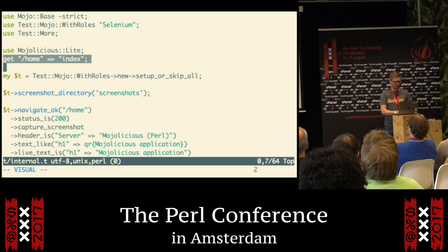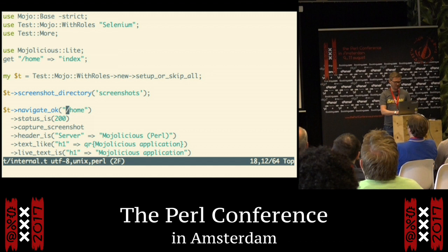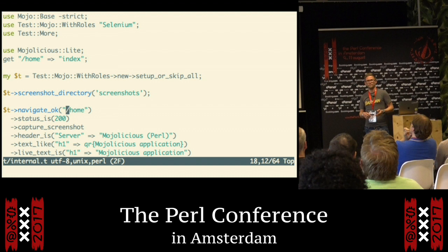In the light app we define a route — slash home, or it could be anything. Then we navigate to slash home. We don't need to specify the whole URL; you just save the relative part and it's going to figure out which hostname and which port your TestMojolicious app is running on.